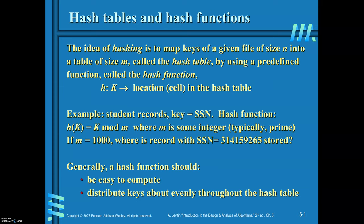The idea behind hashing is that you have n keys to be organized in a table of size m. This table is called a hash table. For that, define a hash function h(k) = k mod m. You are required to find the hash key value for every key of the data you are going to organize. m should be chosen as preferably a prime number.